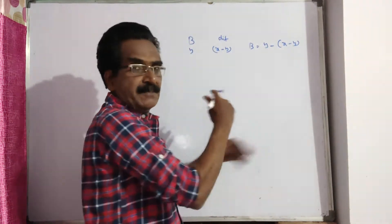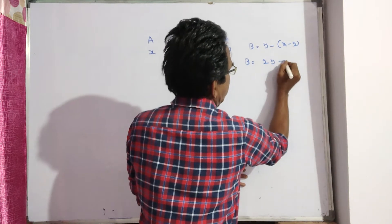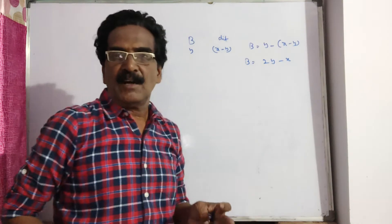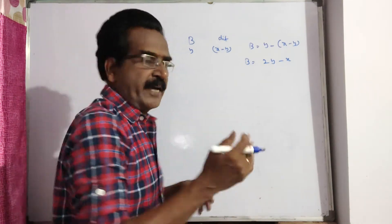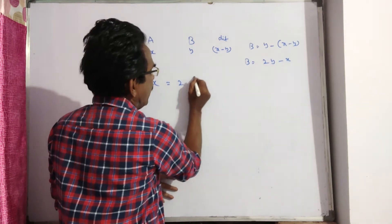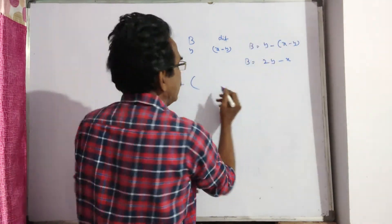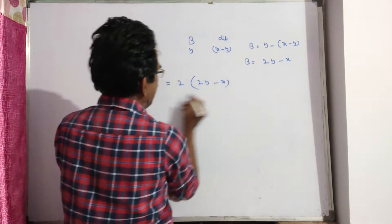X minus Y is the difference between the ages. So B is equal to 2Y minus X. What A says, I am twice as old as you were, that is 2Y minus X.